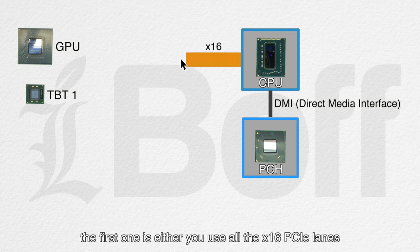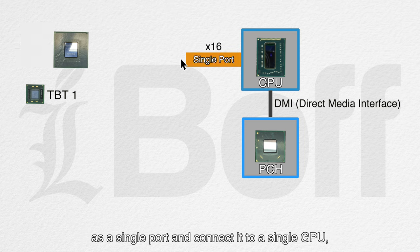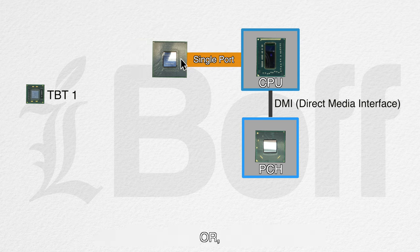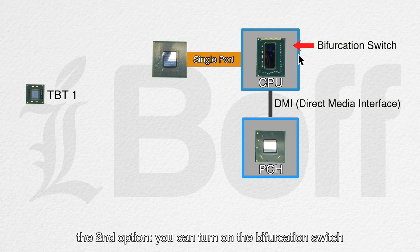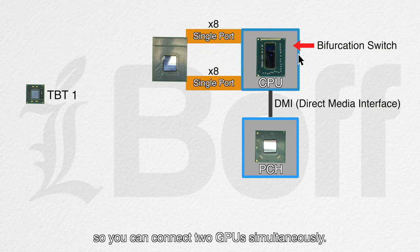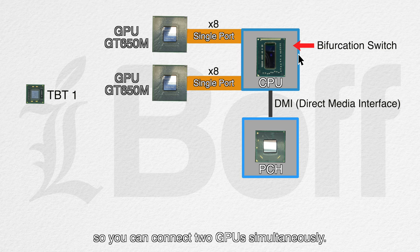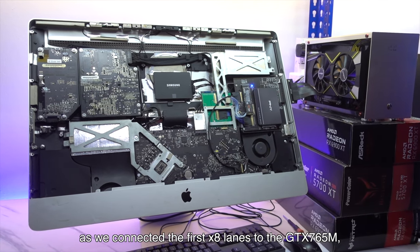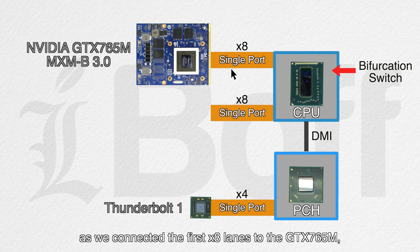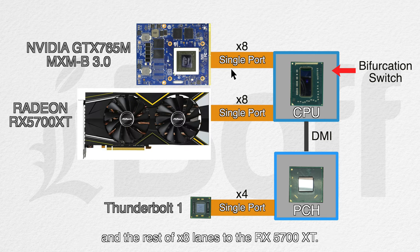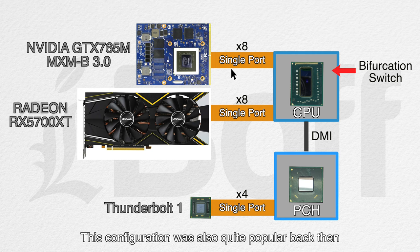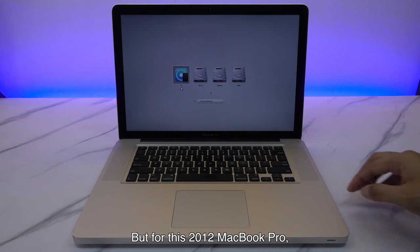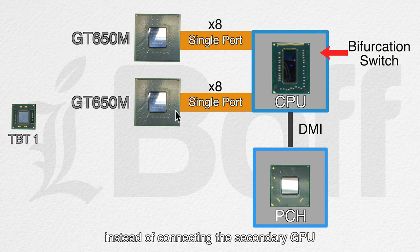From a manufacturer's standpoint, we have 3 options. The first one is to use all 16 PCIe lanes as a single port and connect it to a single GPU, so the GPU will have full bandwidth speed for 16 PCIe lanes. Or the second option: you can turn on the bifurcation switch to divide the single port into dual ports PCIe X8, so you can connect two GPUs simultaneously. This configuration is the one we used to connect dual GPUs to our 2011 iMac in our last video, connecting the first 8 lanes to the GTX 765M and the rest of the 8 lanes to the RX 5700 XT.